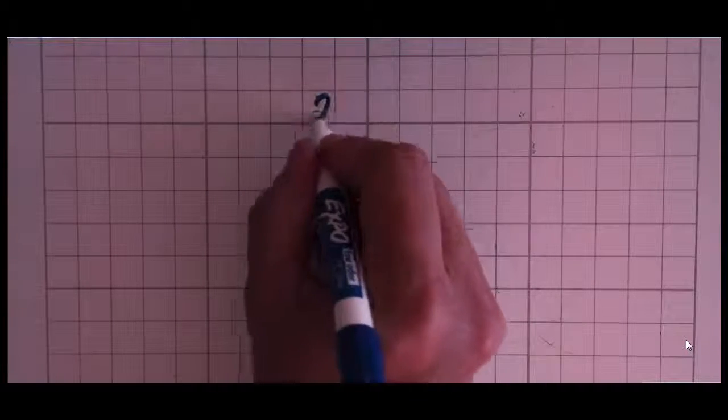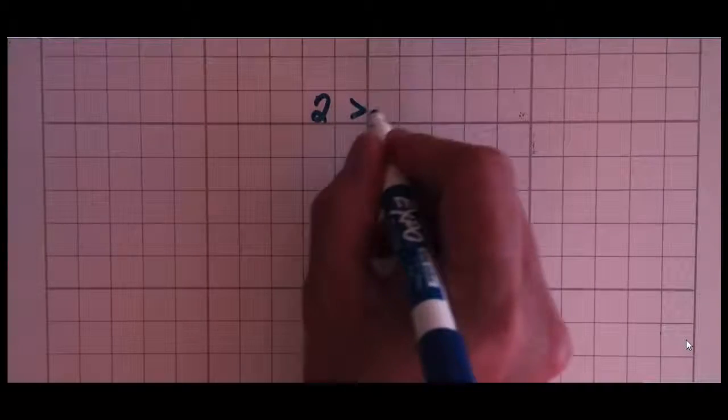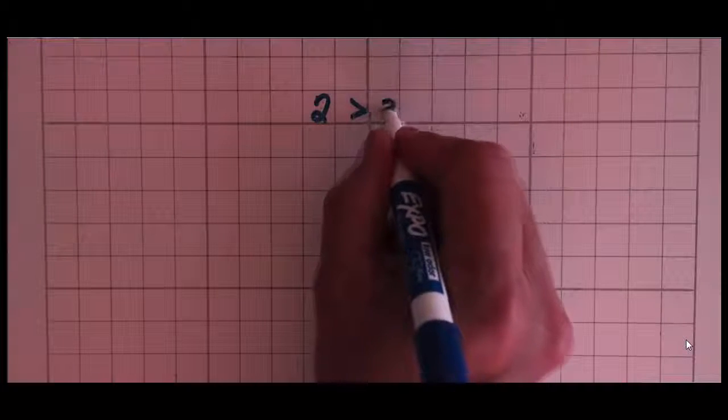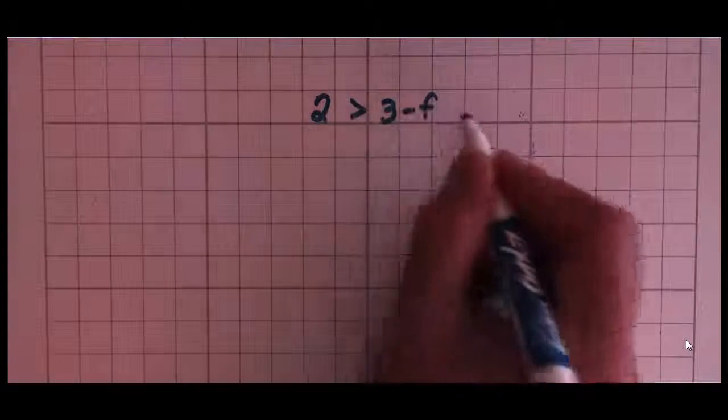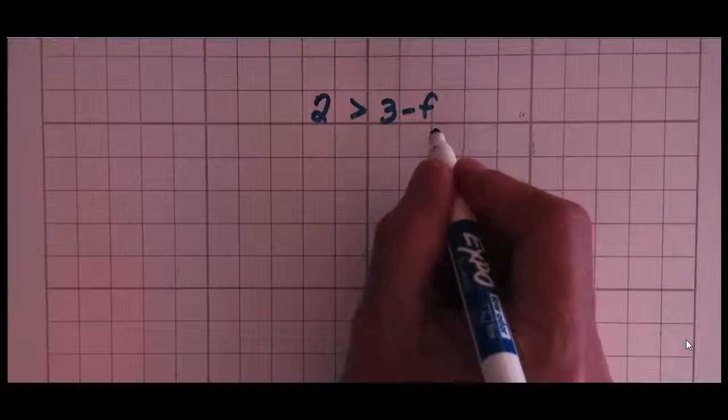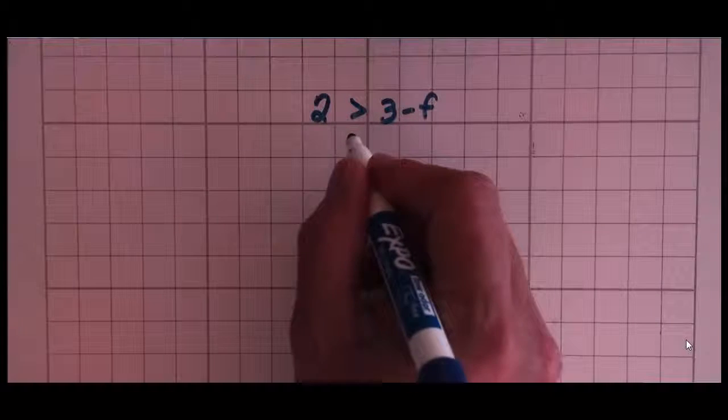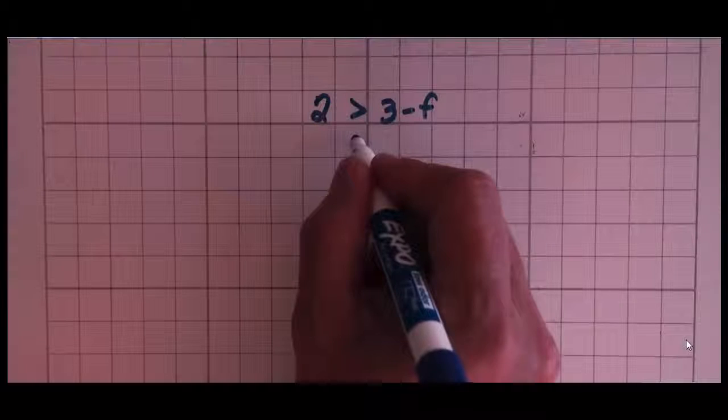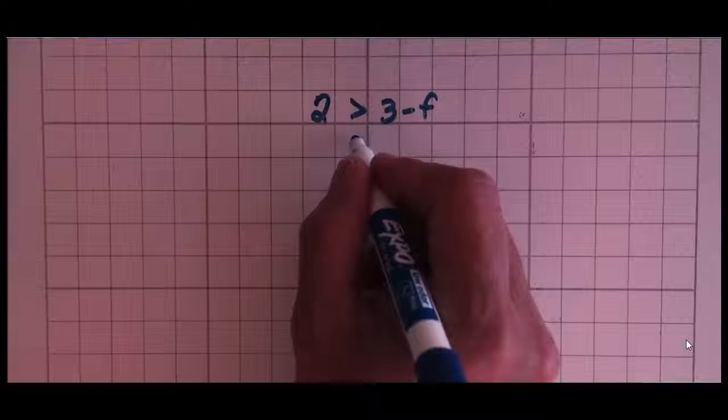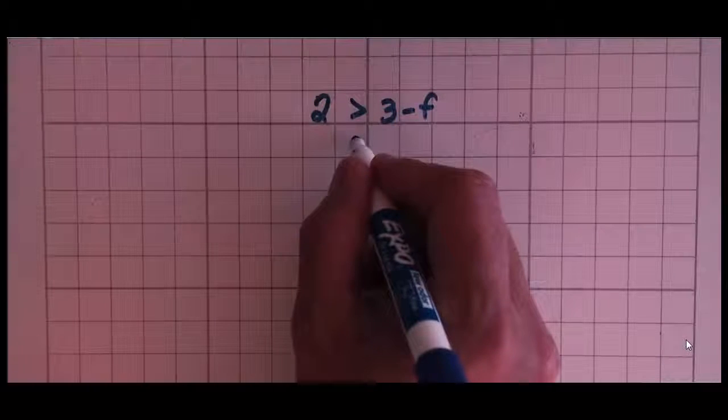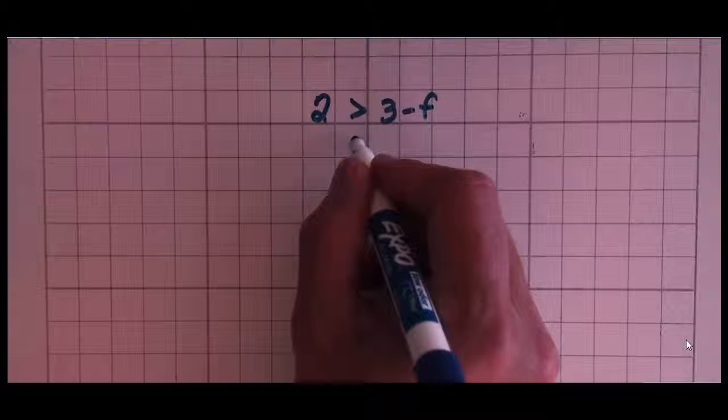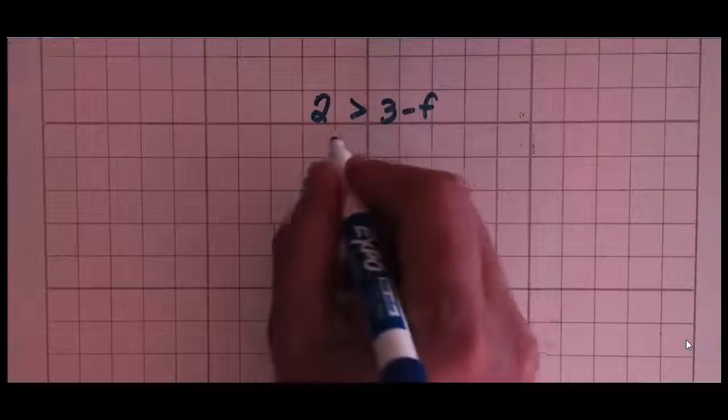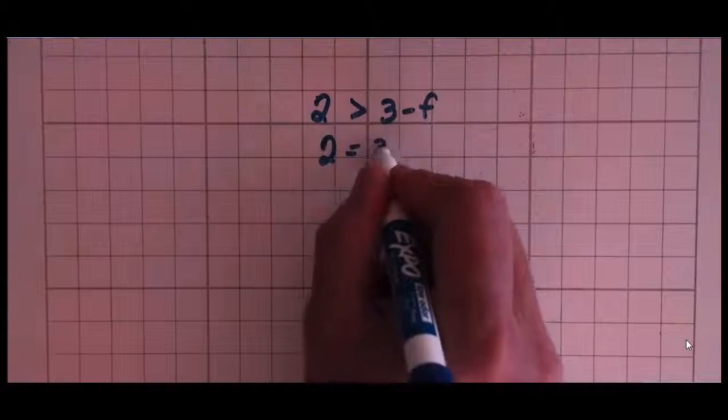Sometimes when you do these problems, however, they look a little bit different. 2 is greater than 3 minus f. Students always want to put the variable on the left side of the equation. That is not necessary. And in fact, it just complicates things unnecessarily. So it makes things much more complicated than they have to be. Let's go ahead and solve this problem.